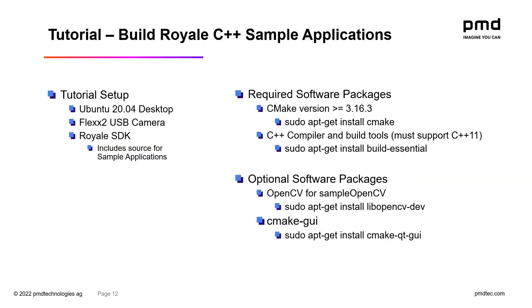For this part of the tutorial, I'm going to show you how to build the Royale C++ sample applications. For my setup, I've got an Ubuntu 20.04 desktop. Connected to it, I've got a Flex 2 USB camera with the USB driver already installed, and I've already downloaded the Royale SDK. To build, I'm going to need to download and install CMake as well as the C++ compiler. Optionally, I can download OpenCV to build the OpenCV sample.